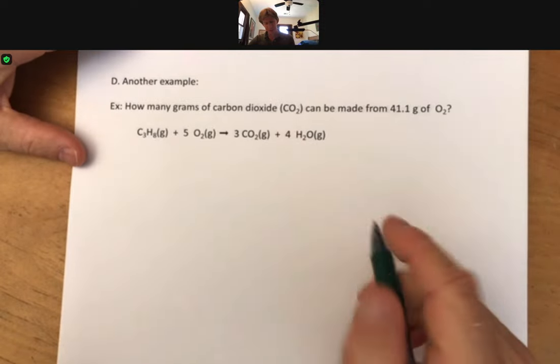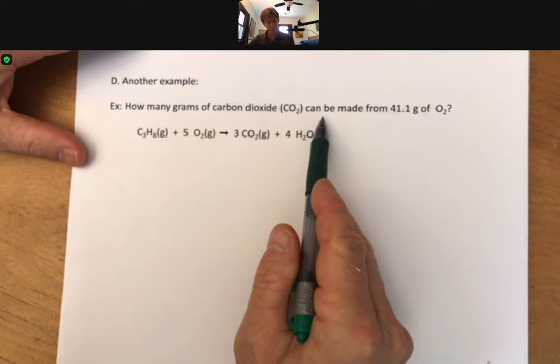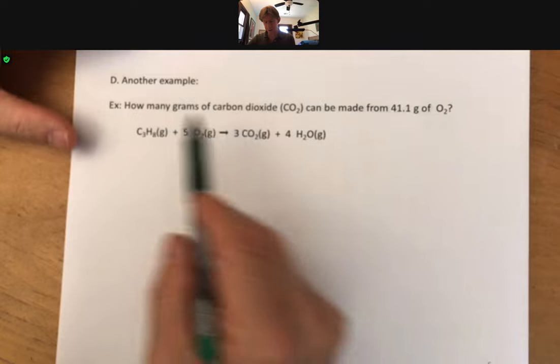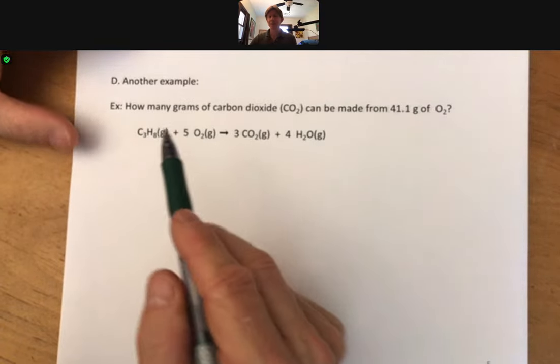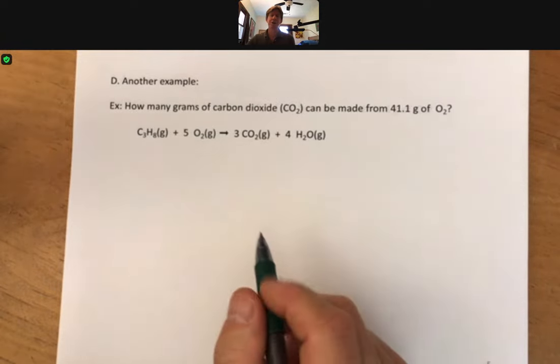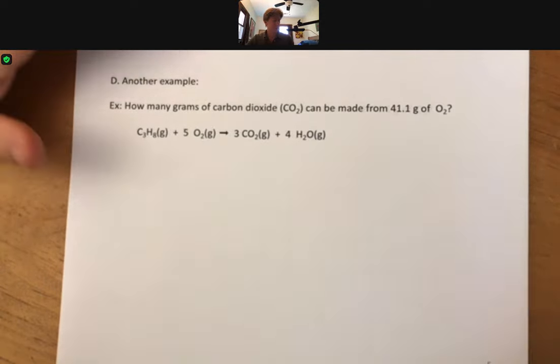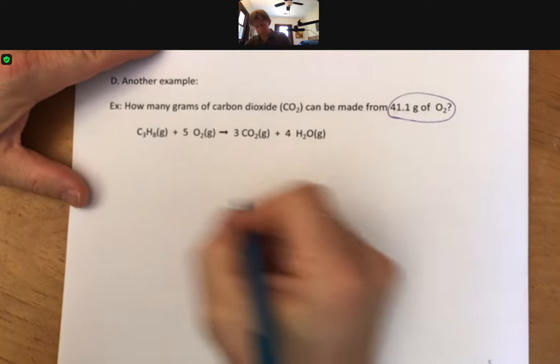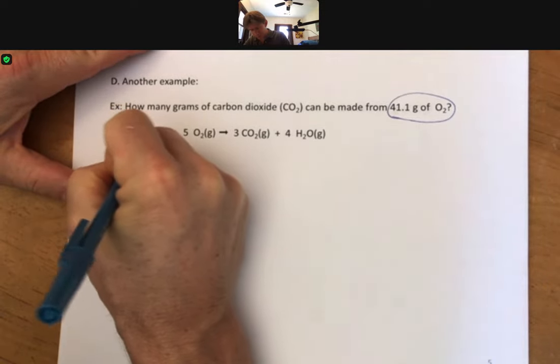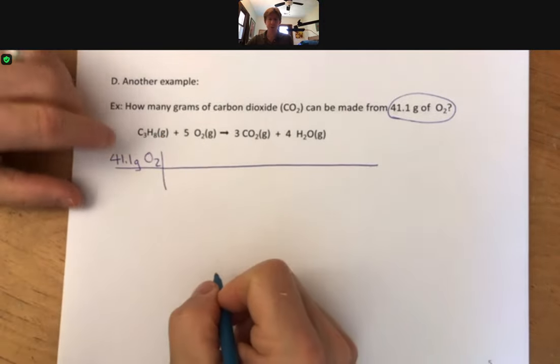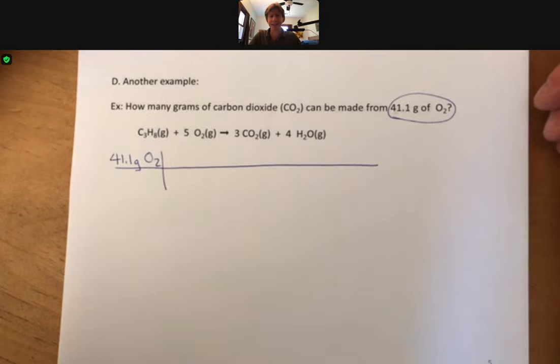Here's another one. This one says how many grams of carbon dioxide can be made from 41.1 grams of oxygen, same number of grams that we just solved for propane. Of course we've got different molar masses, we've got different mole to mole ratios here as well, so we expect to get a significantly different answer. Start with the number in your problem statement, 41.1. Start with grams, we're going to go to moles.